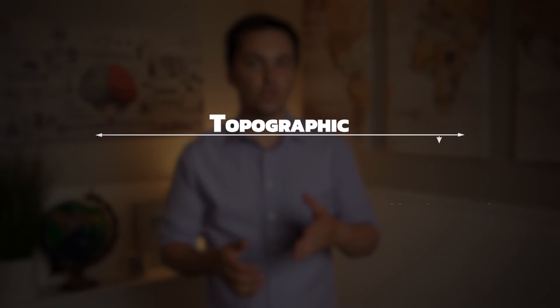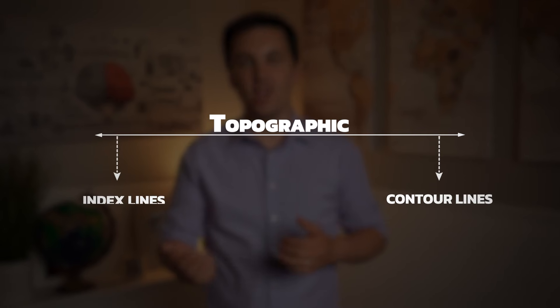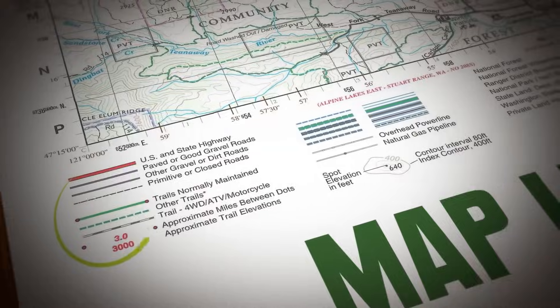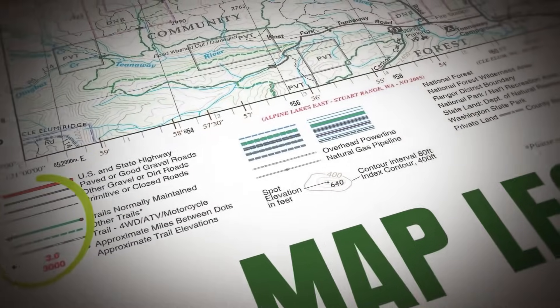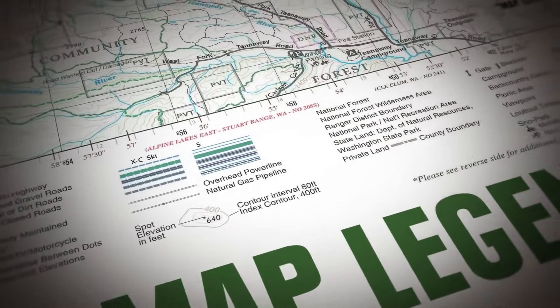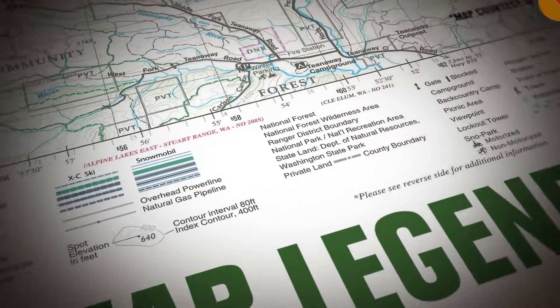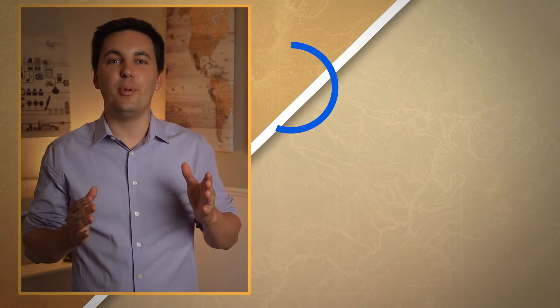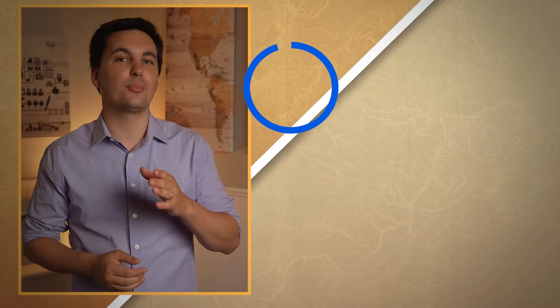Understanding the contour lines, index lines, scale, grid, and legend of a topographic map is key to being able to read these maps correctly. Hopefully this video helped you better understand topographic maps.